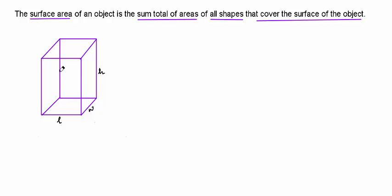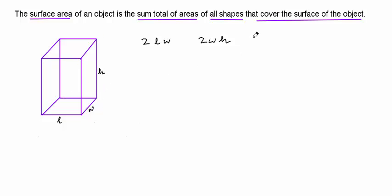We have six rectangular faces in all on the prism. The bottom face and the top face have each got an area of L times W, so the combined area of the top and bottom face is 2LW. Similarly, the combined areas of the two side faces is 2 times W times H, which is 2WH. And finally, for the front face it's H times L and the back face is also H times L, so we have 2LH as the combined area of those two faces.